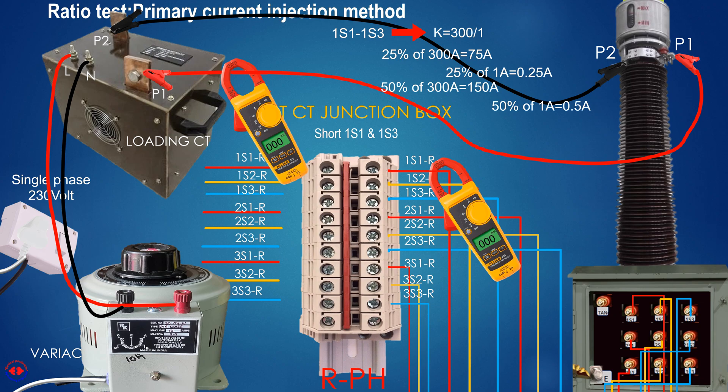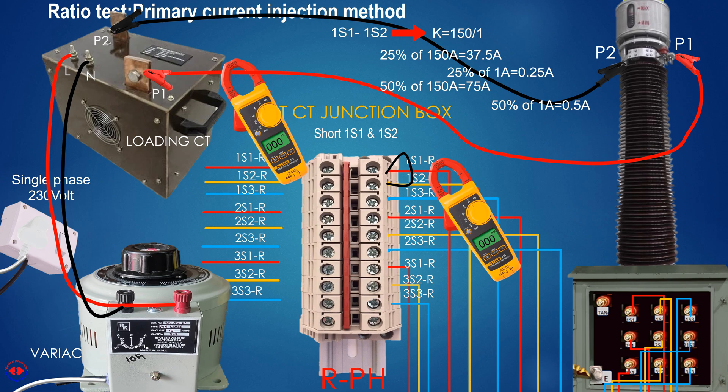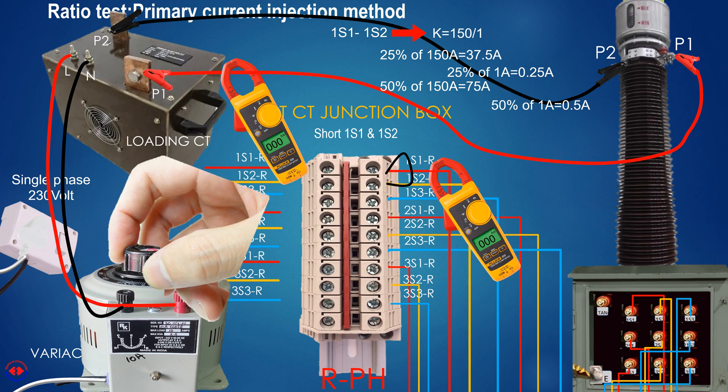Now, if we check the ratio between 1s1 and 1s2 terminal by shorting, and then turning the knob of variac, it will provide 37.5 ampere in the primary and 0.25 ampere in secondary for correct ratio. As we know, there is a 150 ampere ratio between 1s1 and 1s2. So, we should get 0.25 ampere in secondary to achieve correct CT ratio.